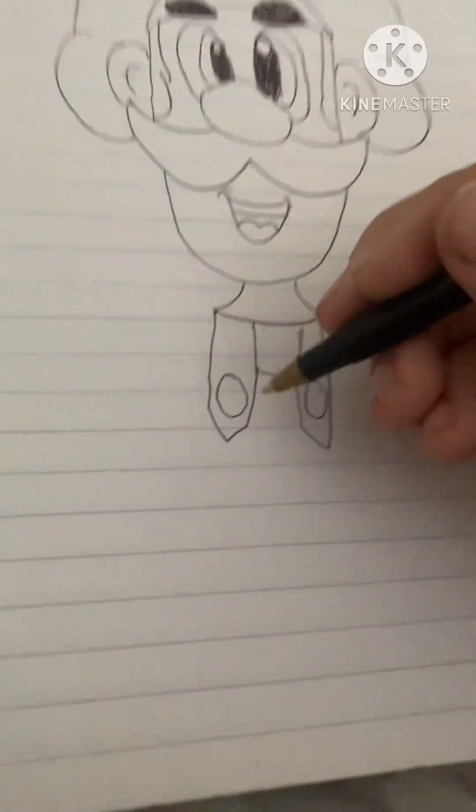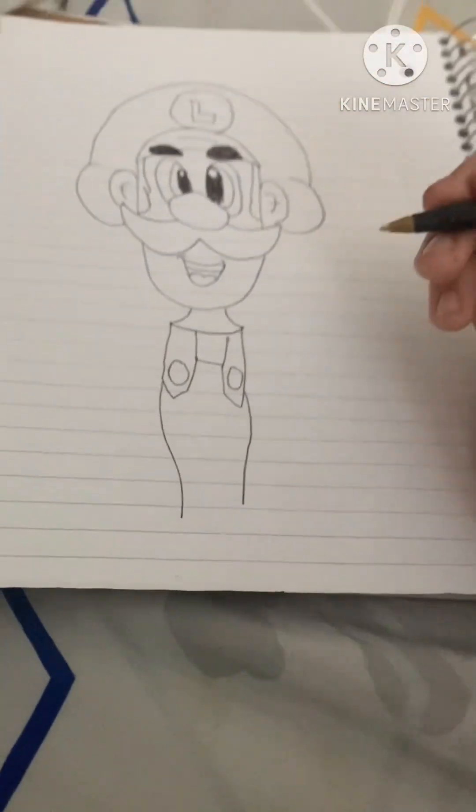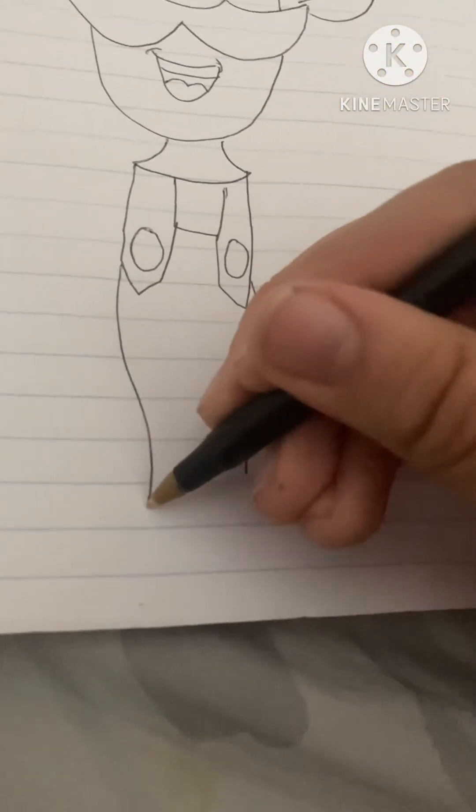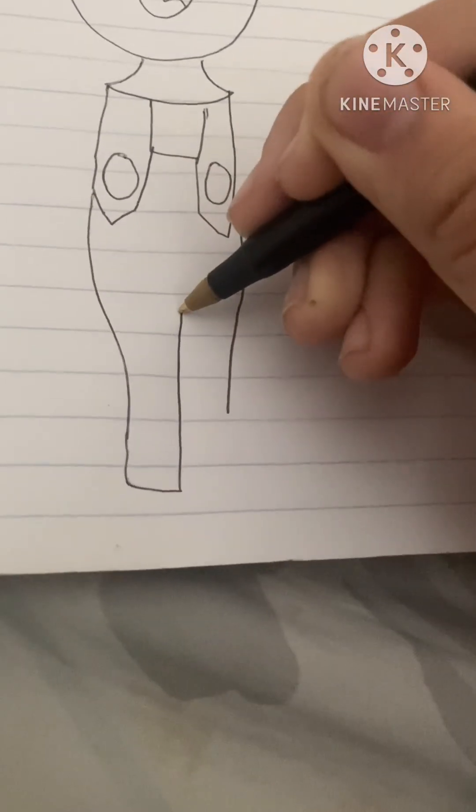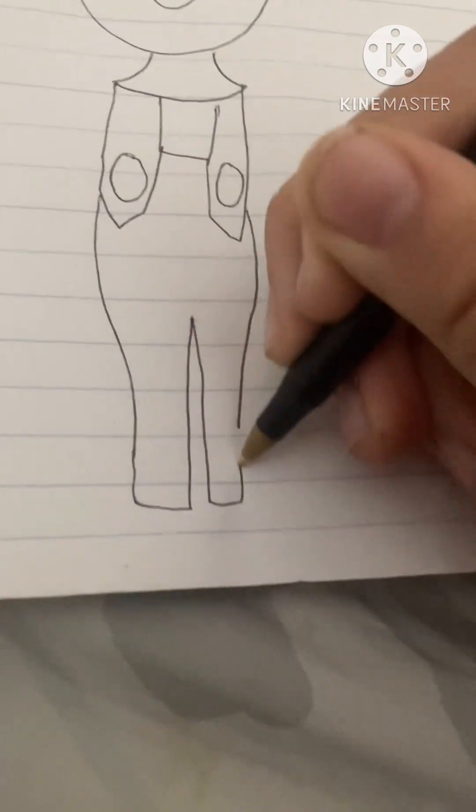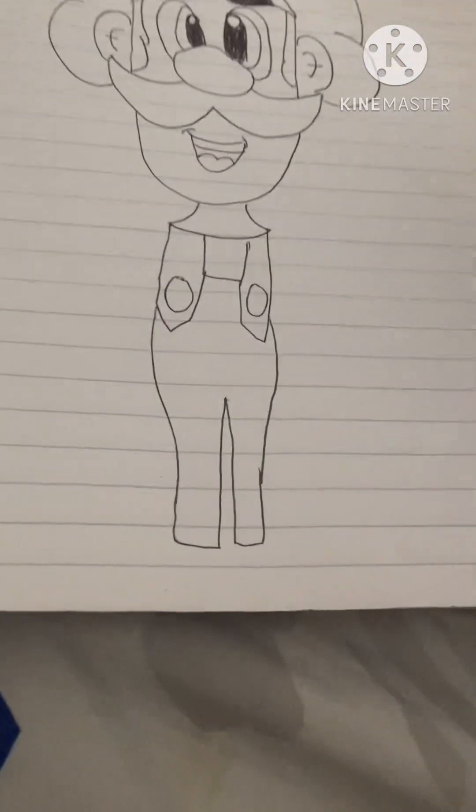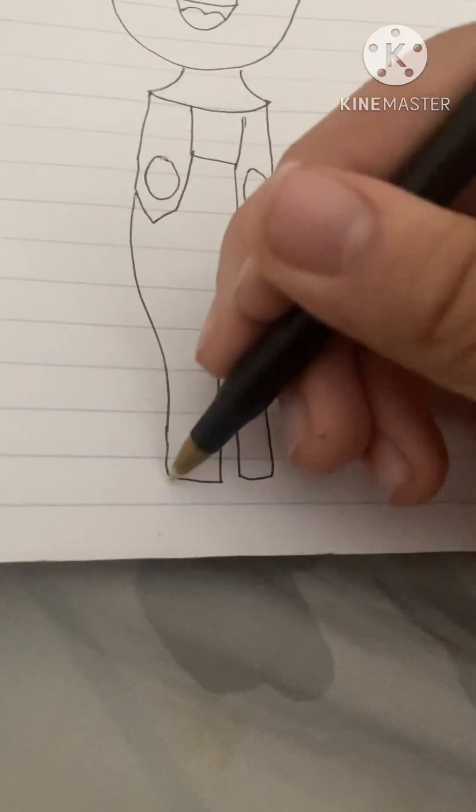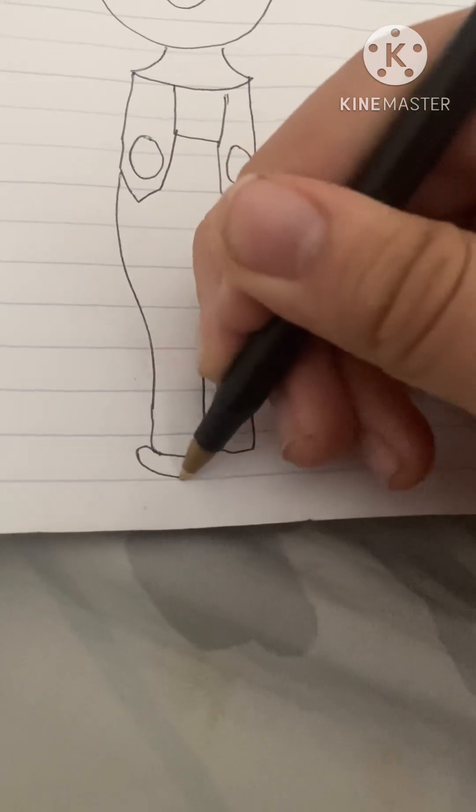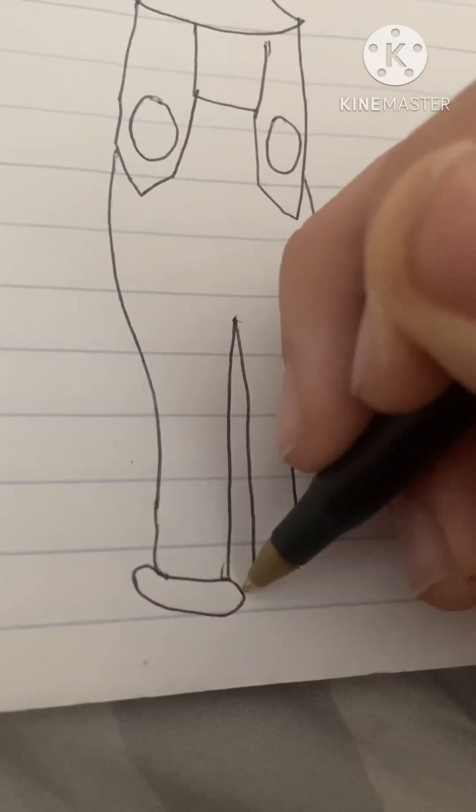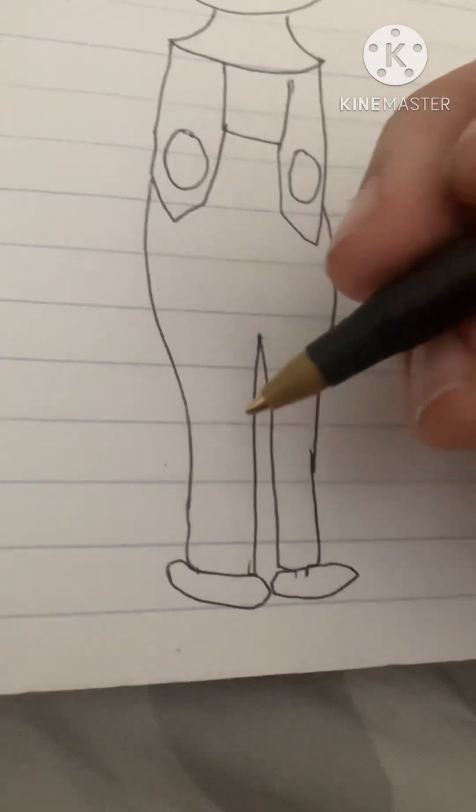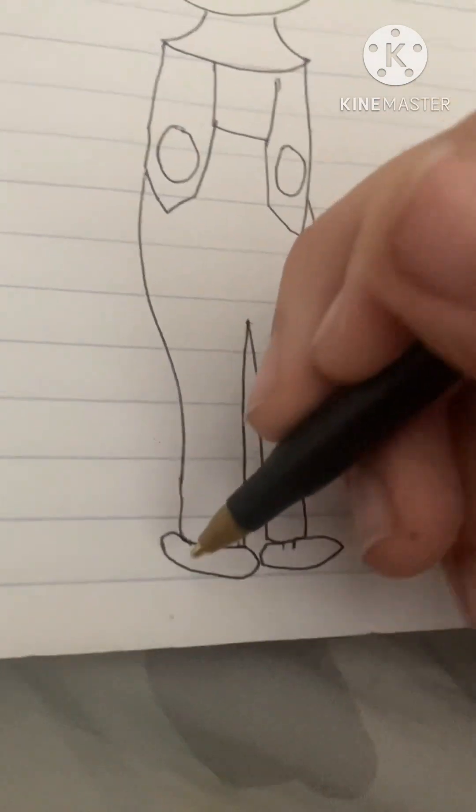And now we're gonna do his stomach. So we're gonna go down here and down here. And now we're gonna go this way, we're gonna go up. Then you go down here and then you go this way and then go up. And now you're gonna do a little thing, kind of like a donut I guess.